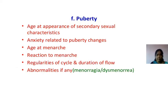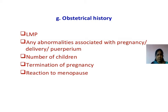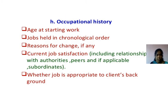Puberty: age of appearance of secondary sexual characteristics, anxiety related to puberty changes, age at menarche, reaction to menarche, regularity of the cycle, duration of flow, and abnormalities such as menorrhagia or dysmenorrhea. Obstetric history: last menstrual period, any abnormalities associated with pregnancy, delivery, parity, number of children, termination of pregnancy, and reaction to menopause.